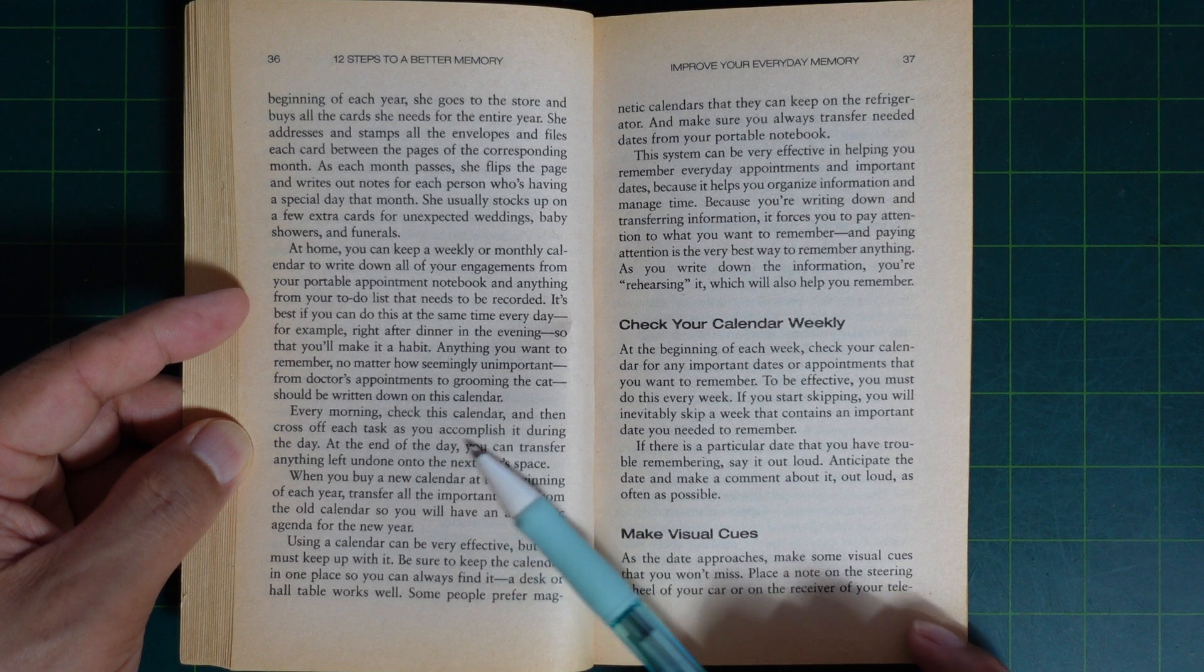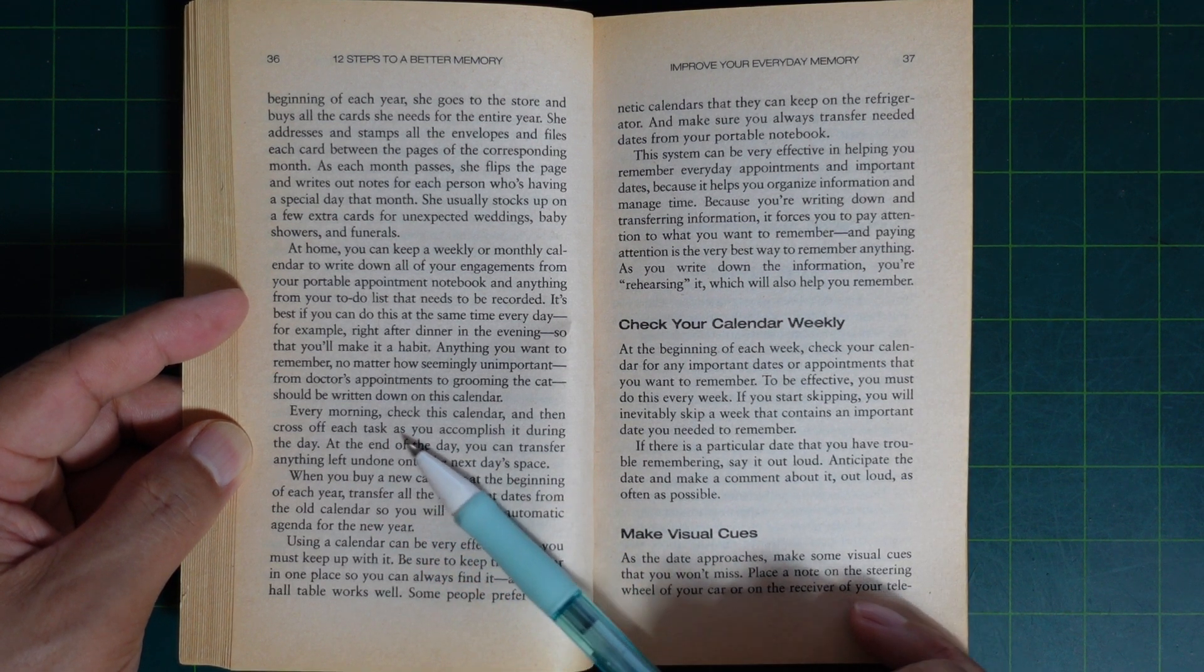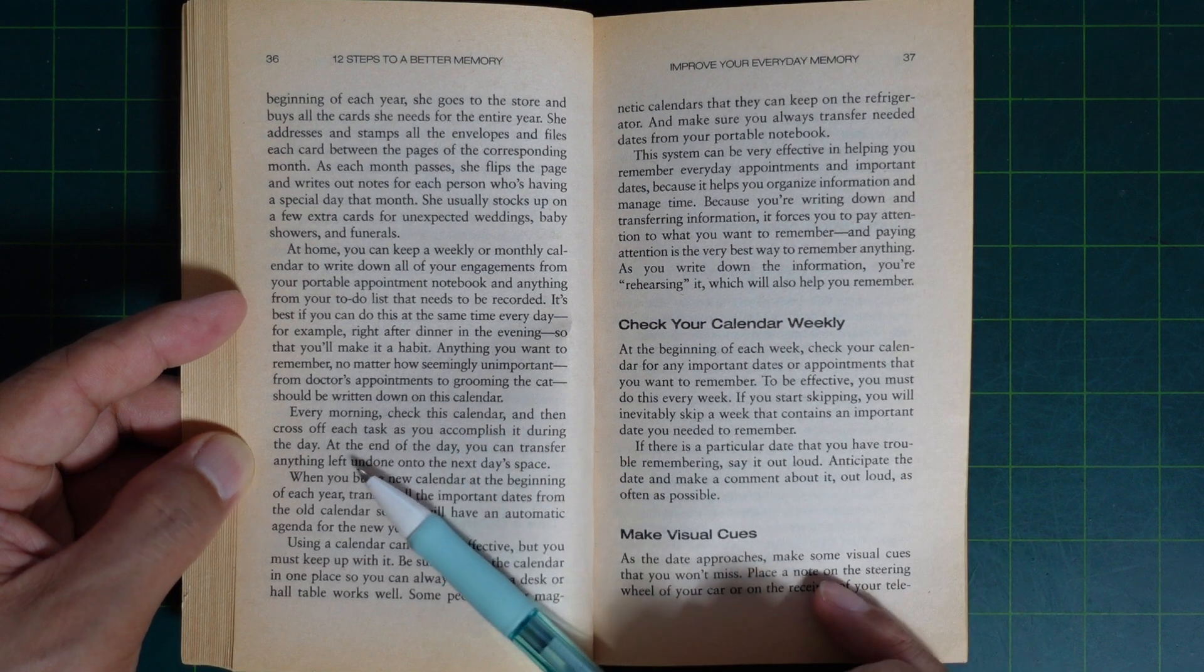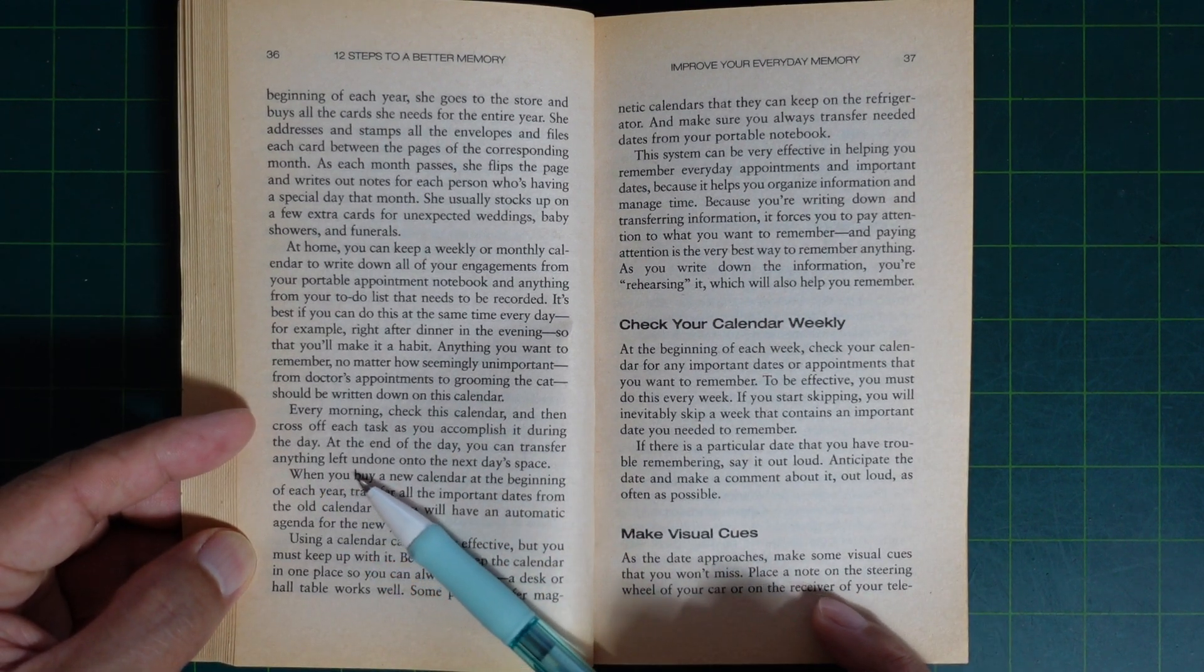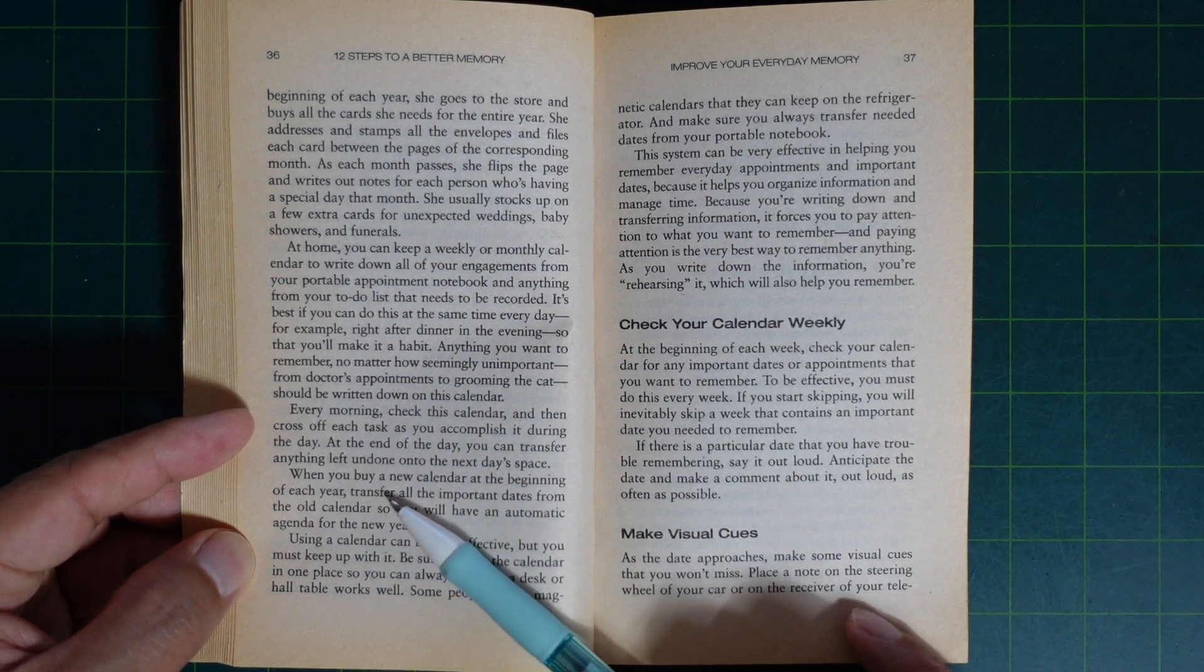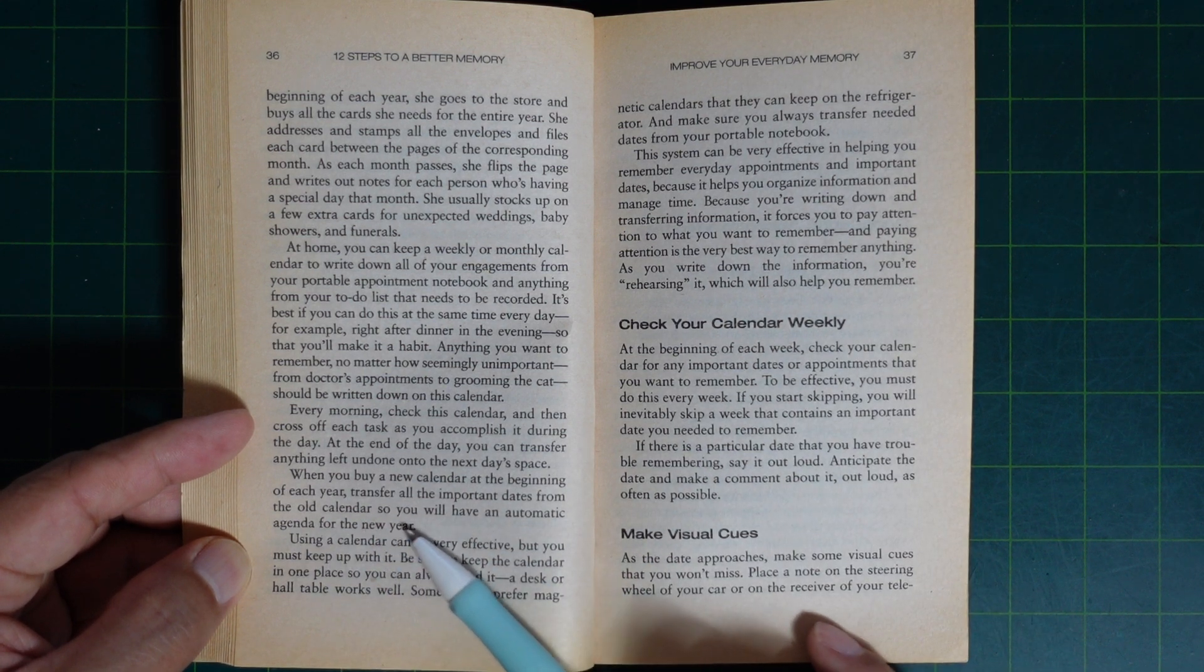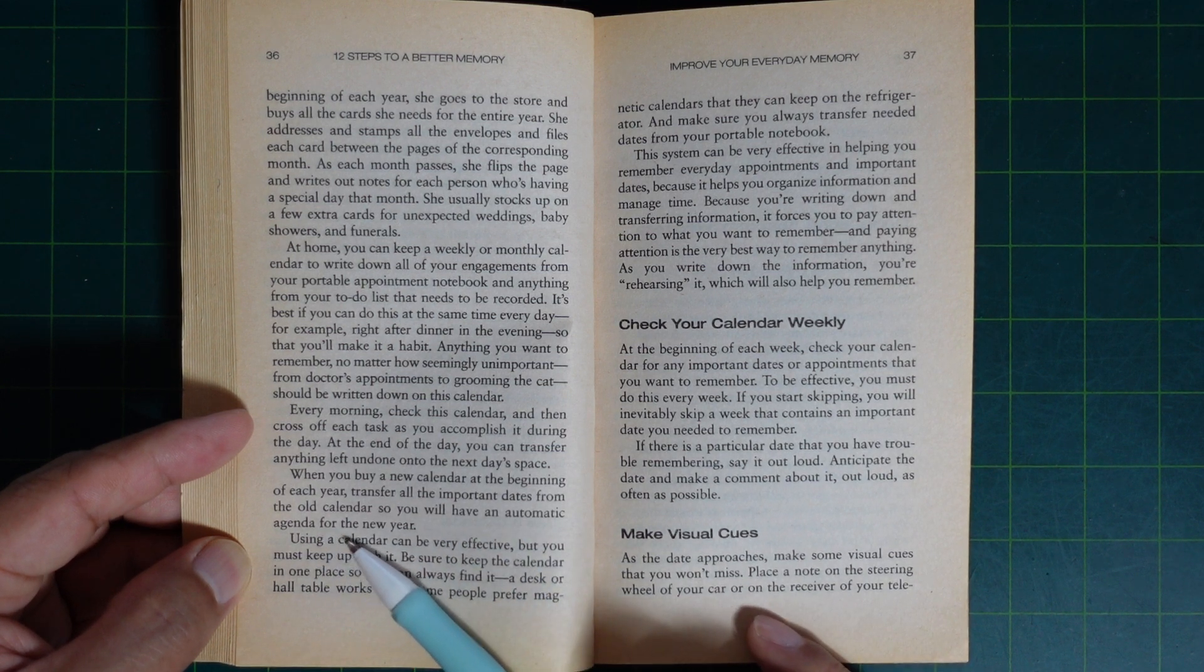Every morning check this calendar and then cross off tasks as you accomplish them during the day. At the end of the day, you can transfer anything left to the next day's space, and when you buy a new calendar at the beginning of each year, you will transfer all the important dates from the old calendar so you will have an automatic agenda for the new year.